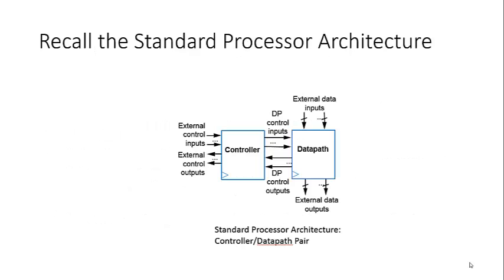Looking at our RTL design process, we can look at the standard processor architecture that we've been talking about in class. We see that it's basically consisting of a controller along with a datapath. We want to use this process design to implement our stopwatch.